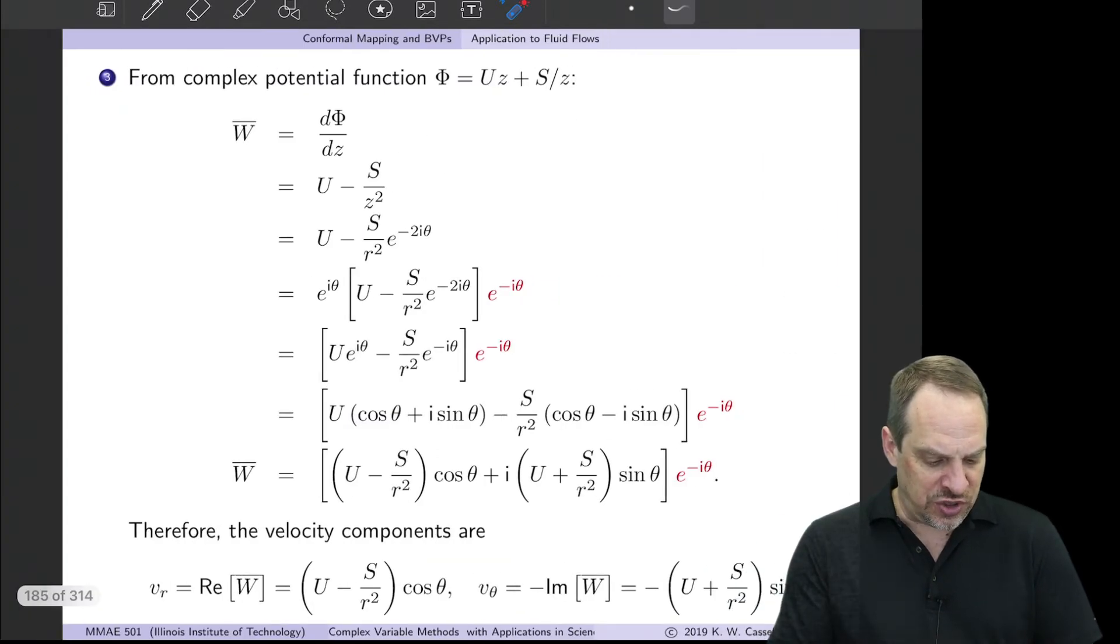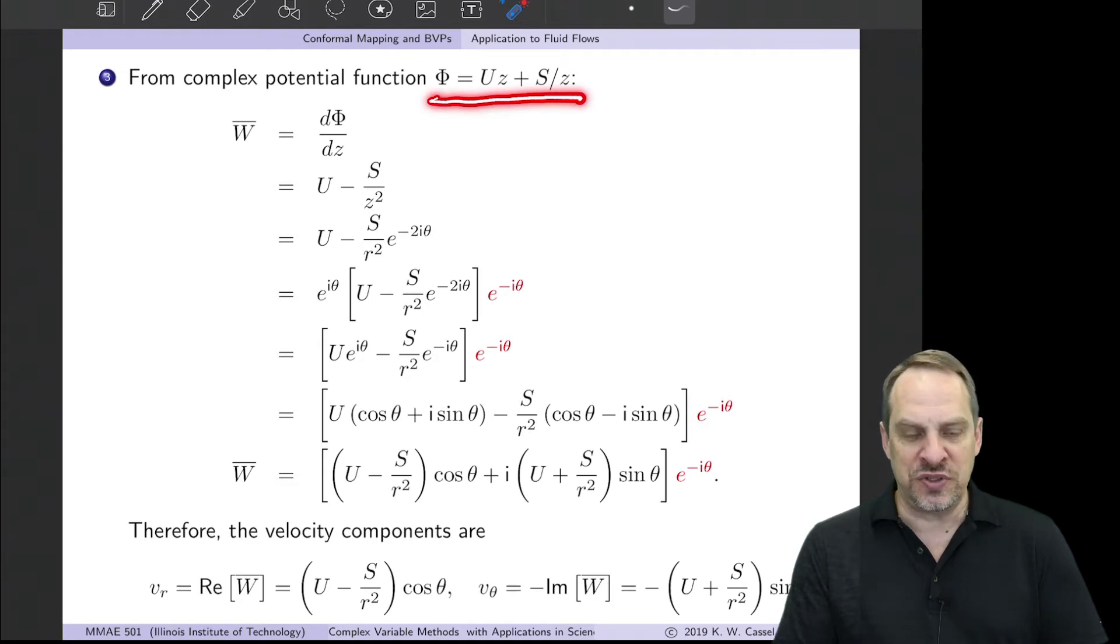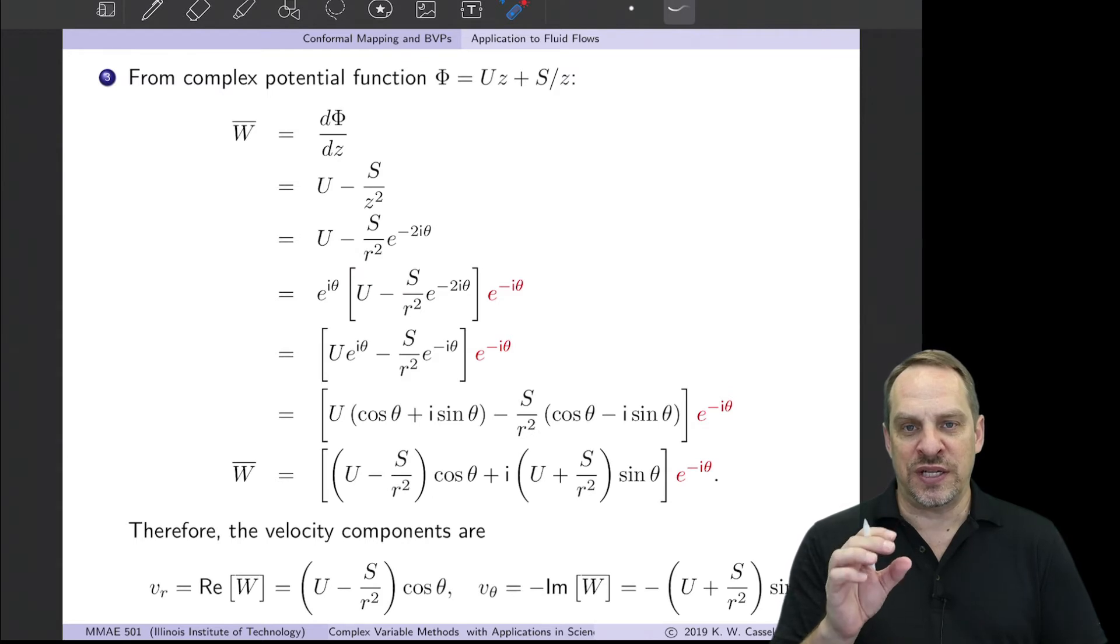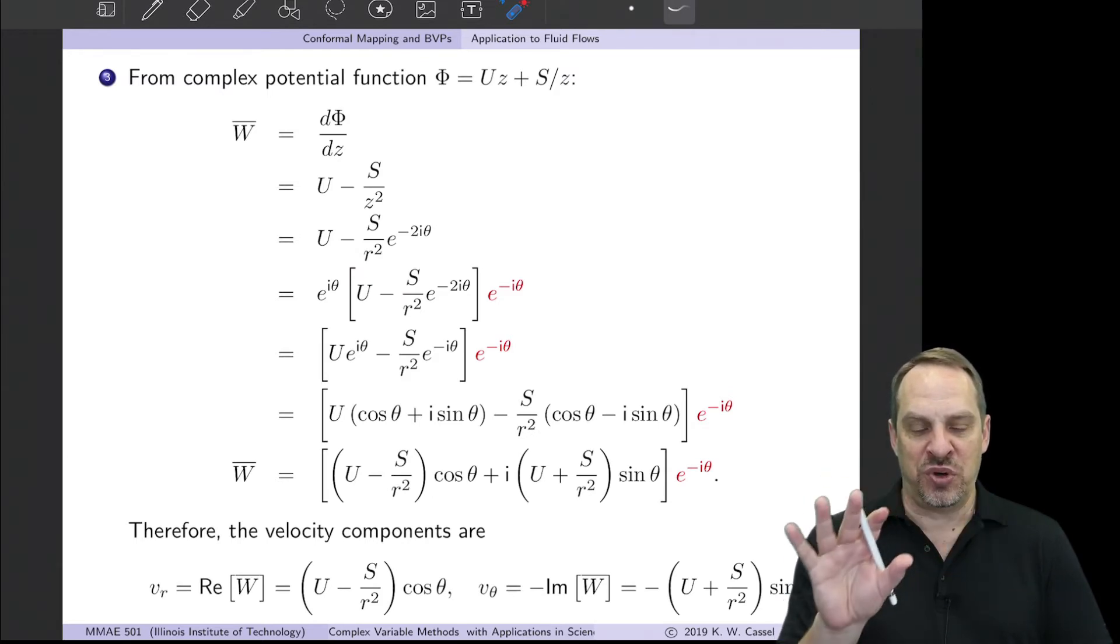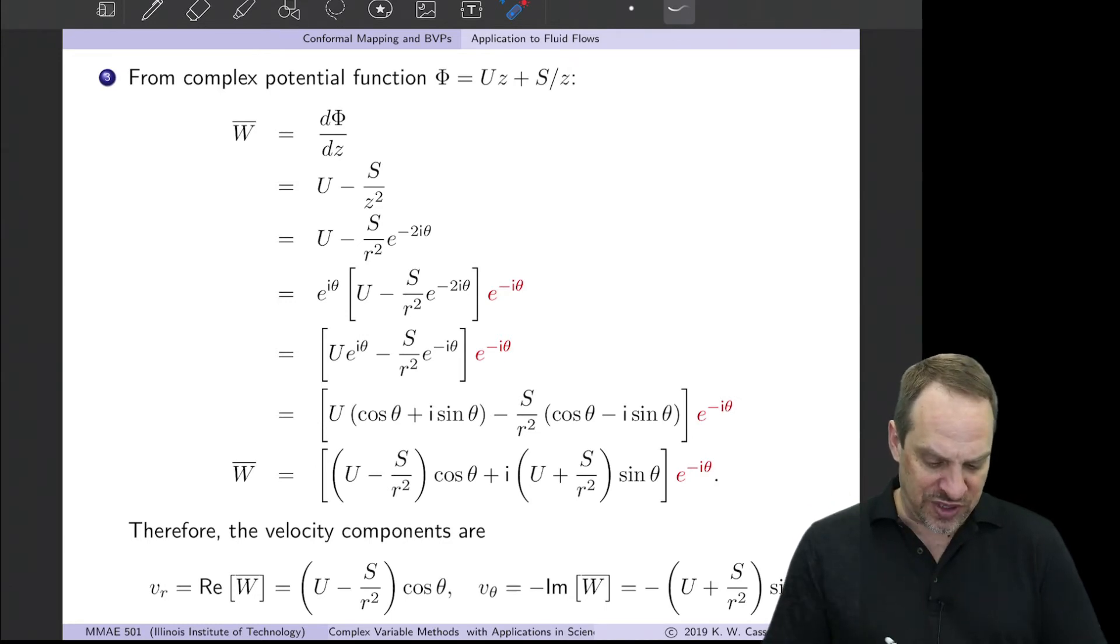The third way would be to use the complex conjugate of the complex velocity, which again is just dΦ/dz. So here's the complex potential function, Uz + S/z. Differentiate that with respect to z, and you just get U - S/z². Write z in terms of re^(iθ). Now remember what we said in the last video: when we're using polar coordinates and extracting out the velocity components from the complex conjugate of the complex velocity, you have to remember that there's this e^(-iθ) factor.